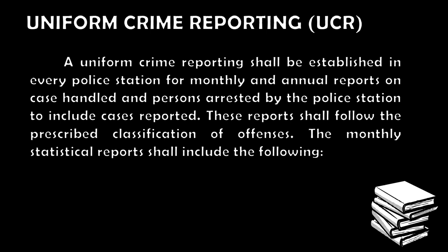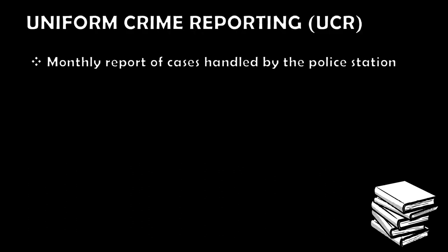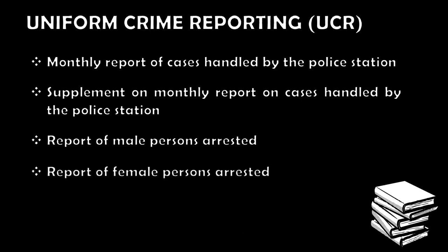What are the contents of the Uniform Crime Report? These reports shall follow the prescribed classification of offenses, and the monthly statistical reports shall include the following: First is the monthly report of cases handled by the police station — monthly, the reported cases in each police station are tabulated for the UCR. Second is the supplement on monthly report on cases handled. Third is the report of male persons arrested. And also the report of female persons arrested.